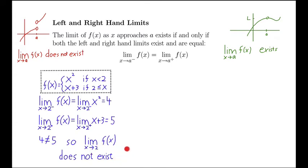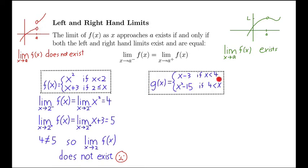The limit doesn't exist for that example. Now let's look at another example — another piecewise function. It's one thing if x is less than four, a different thing if x is greater than four, and it's not even defined if x equals four. But that doesn't matter because when we take limits, we don't care about what happens when x is equal to four. Again, we evaluate the limit from the left and from the right to see if they're equal.